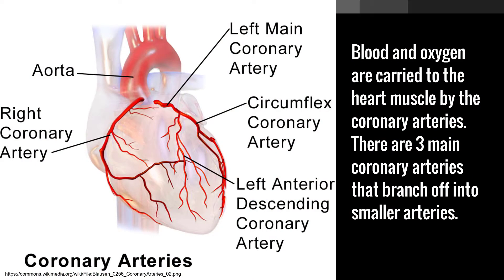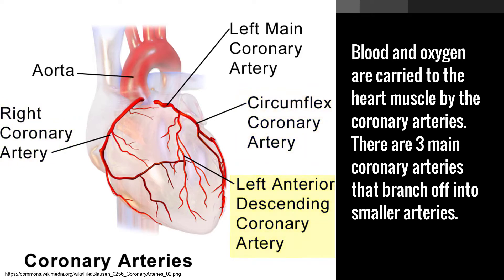Blood and oxygen are carried to the heart muscle by the coronary arteries. There are three main coronary arteries that branch off into smaller arteries. The three main arteries are the right coronary artery, the circumflex coronary artery, and the left anterior descending coronary artery.